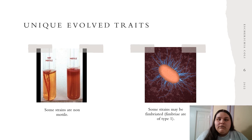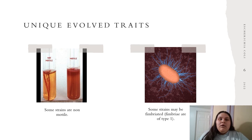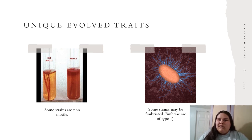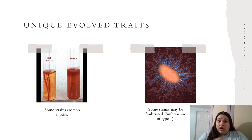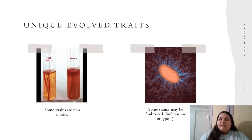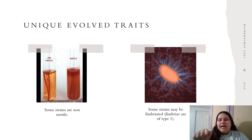Now we have unique evolved traits. There are some strains that are non-motile. Most strains of E. coli are motile, but there are a few that have evolved into being non-motile. Some strains are also fimbriated, which basically means they have those little hair-like structures around the rod shape. Some strains do not have those fimbriated hair-like structures and some do.